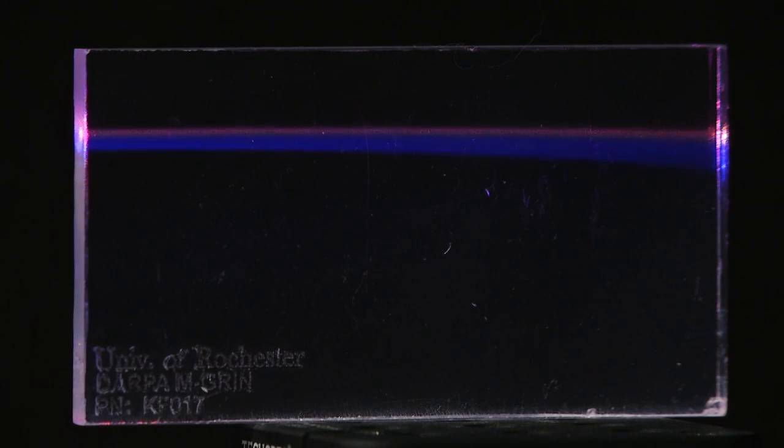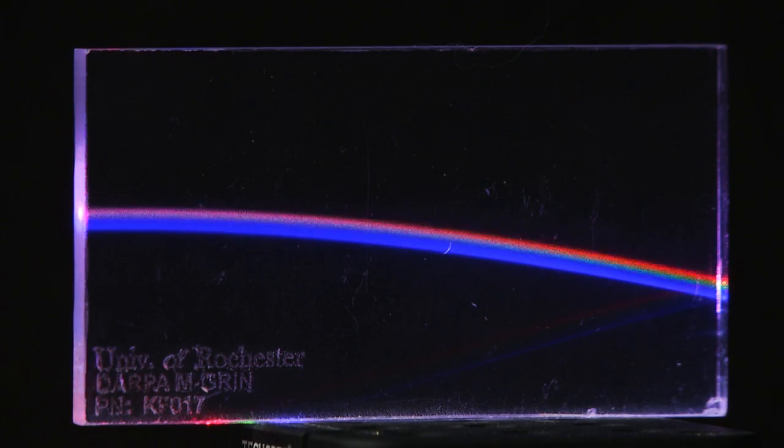The area of gradient index optics is one in which light does not travel in a straight line. Now, normally, light travels in a straight line until it hits a refracting surface, such as your eyeglasses, or reflecting surface, such as a telescope mirror.